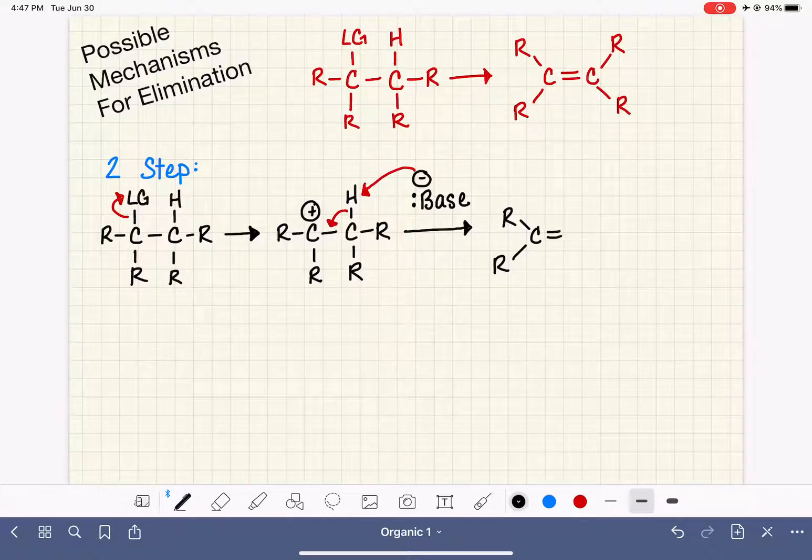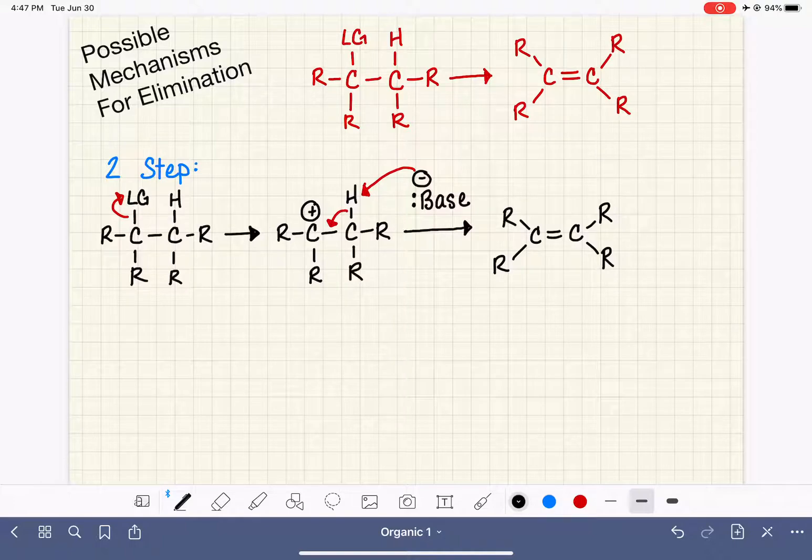And forming that carbon-carbon double bond will remove the positive formal charge from our carbon on the left because once the double bond is formed, it will have four bonds again. So we end up with the alkene.